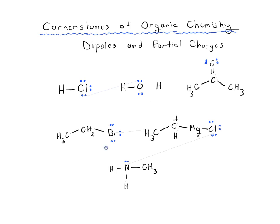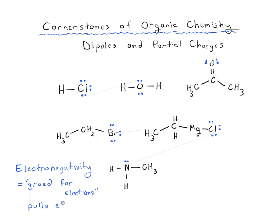Here's the key take-home message from this video. We're going to look at each of these bonds and use a concept called electronegativity. If you haven't heard of it before, think of it in human terms as greed for electrons. A more electronegative element is going to pull electrons towards itself. That is what a highly electronegative element does — it has a tendency to attract electrons. We're going to go through each bond and decide which end is more electron-rich and which is more electron-poor.